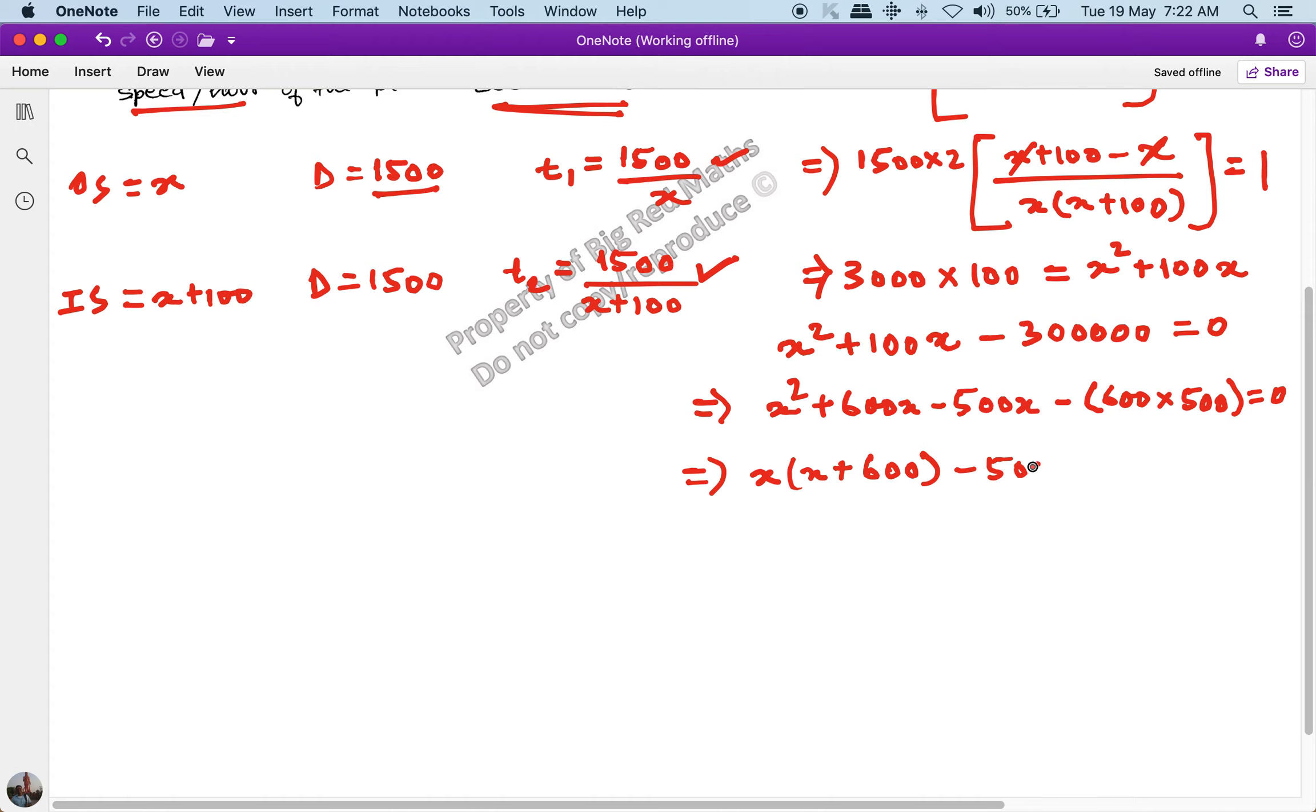The solution becomes x plus 600 into x minus 500 equals 0. Now see, here we get the value x equals minus 600, but speed cannot be negative because we assumed x as speed. So we have to ignore this value. And x minus 500, when I equate to 0, gives me x equals 500.